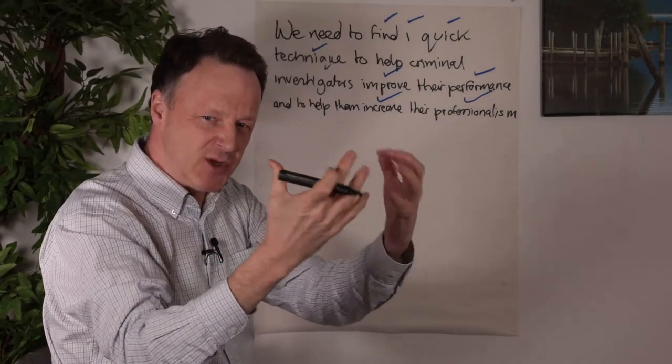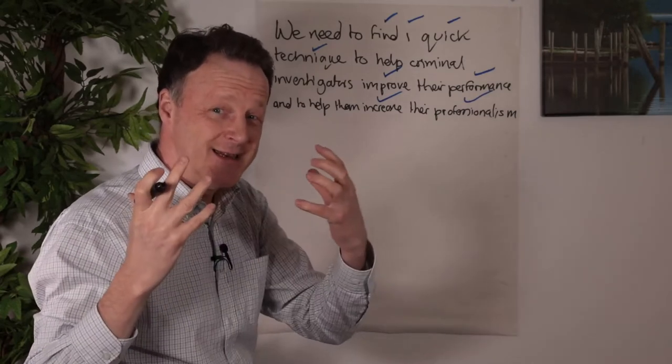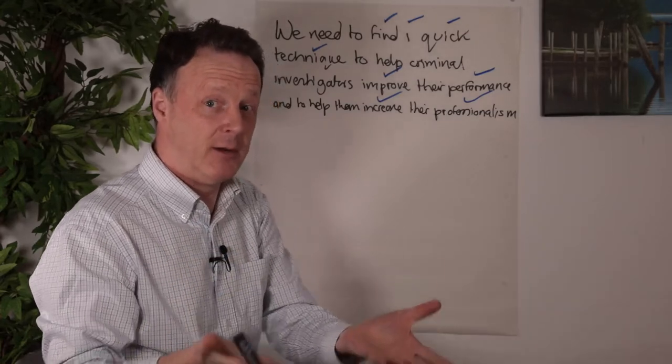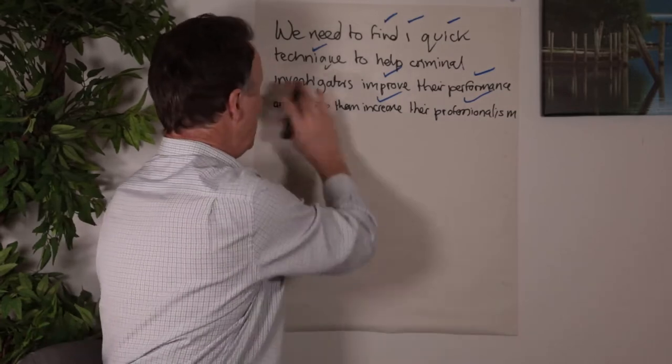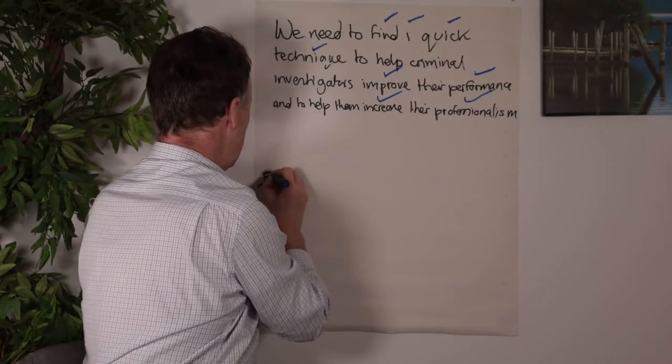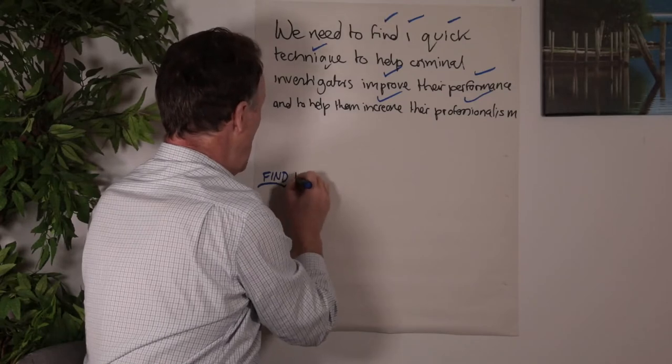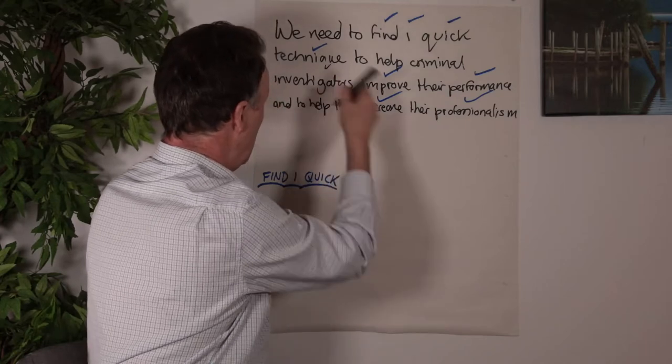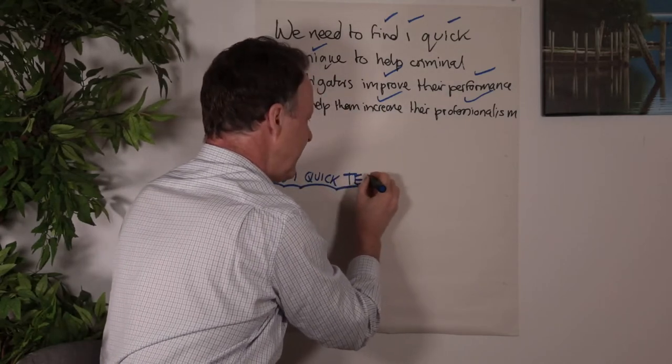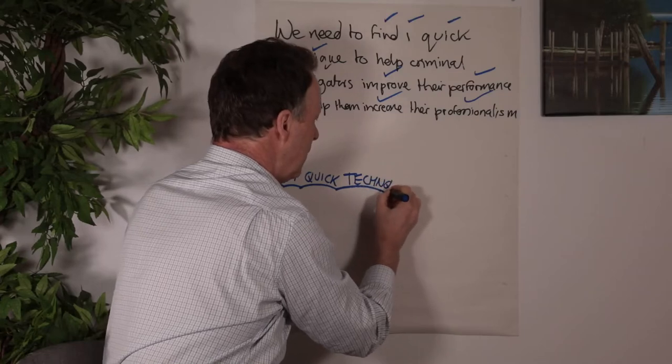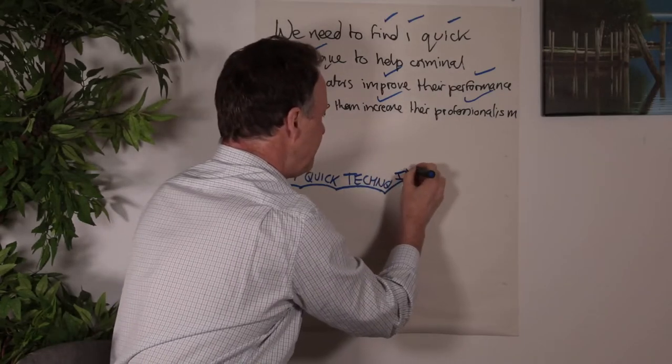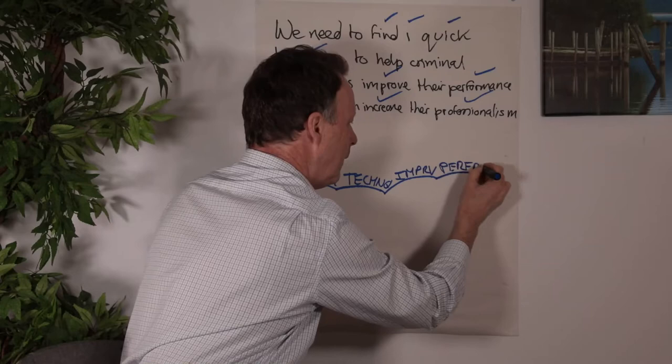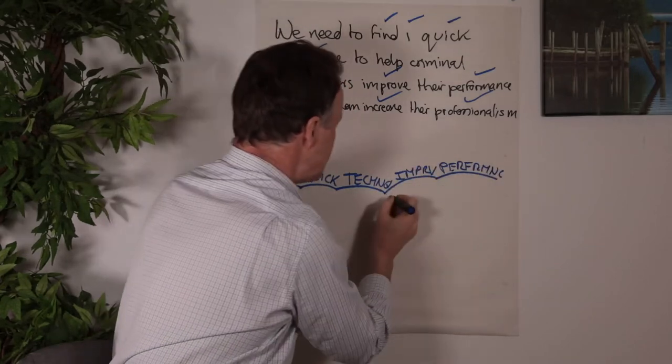The next step is to take that filtered information, which is the key information, and do deep processing. This changes everything and ramps up your real-time understanding. So here we go: we go 'find, one, quick, technique'—now I'm going to abbreviate here because it just helps with speed—'technique,' 'improve performance,' and 'increase professionalism.'